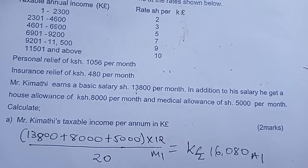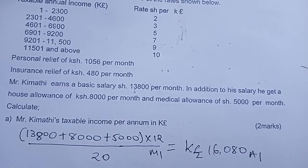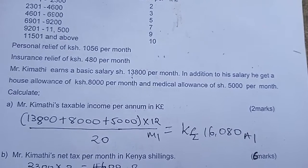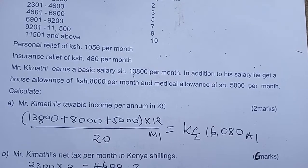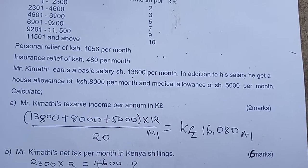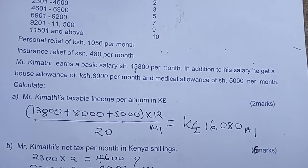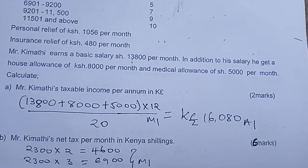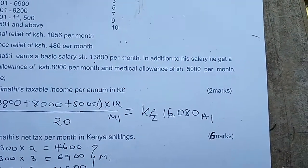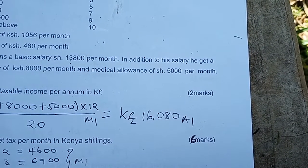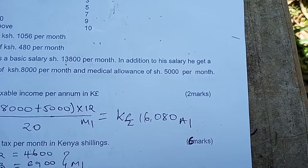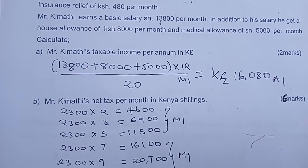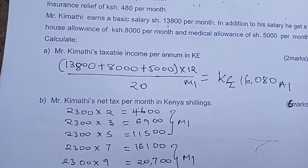Since we are given the salary and allowances per month, we add them to get the taxable income. We take the basic salary plus the allowances and multiply by 12 to get the annual taxable amount. Then, to convert into Kenya pounds, we divide by 20. The result is 16,080 Kenya pounds.